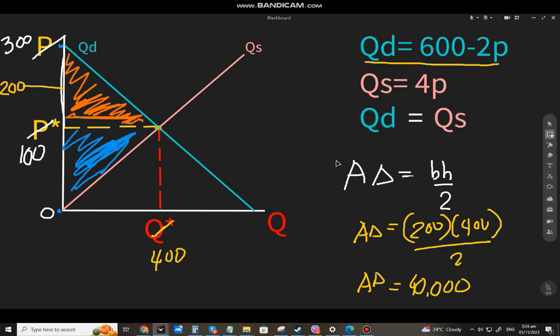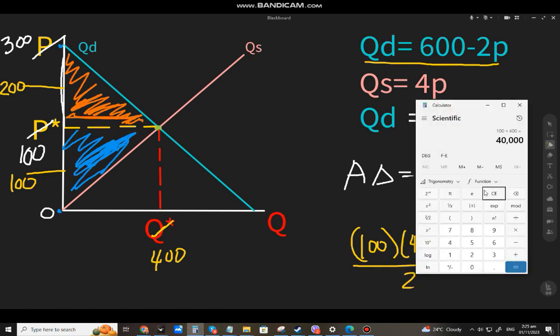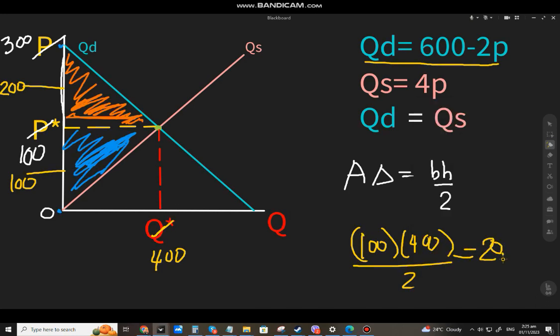Pag producer surplus naman. Producer surplus natin. That will be, ito 100 to. Ito zero. So, technically yung height is 100. So, this one is 100. At ang base natin ay 400 din. So, 100 times mo ng 400. Over mo ng 2. Gamit ka ng calc. And that will be 20,000. So, yung producer surplus natin ay 20,000 pesos.